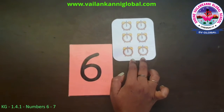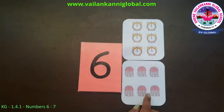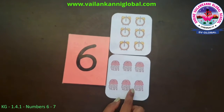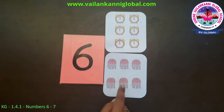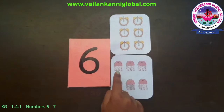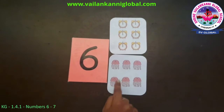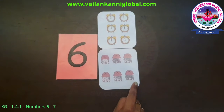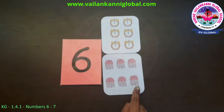Now let's see the next picture. What's that? That's a jellyfish. Let's count how many jellyfishes are there. One, two, three, four, five, six. How many jellyfishes are there? There are six jellyfishes.